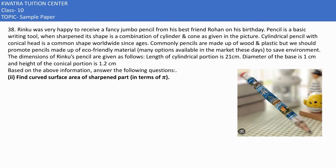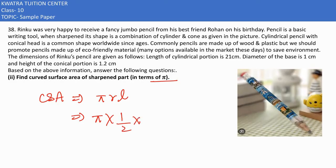In the second part, we need to find the CSA of the sharpened part in terms of pi. The CSA of a cone is π·r·L. Here r = 1/2 and L = 1.3, so the CSA = π × 0.5 × 1.3 = 0.65π cm².